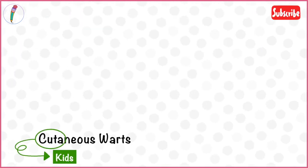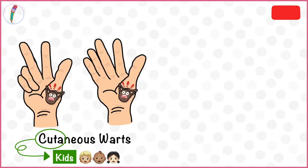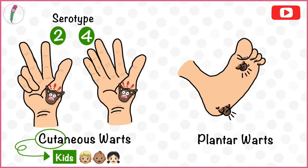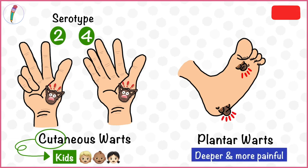Cutaneous warts are usually found in the pediatric age group, or in kids. They predominantly affect the hands and fingers and are caused by serotypes 2 and 4. Plantar warts are commonly seen on the soles of feet and are much deeper and more painful. These are caused by serotype 1.